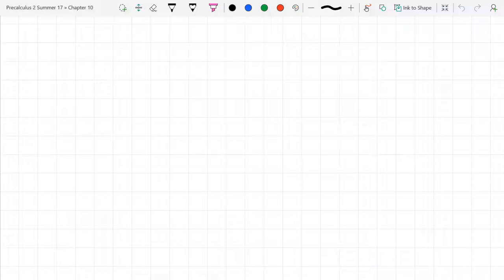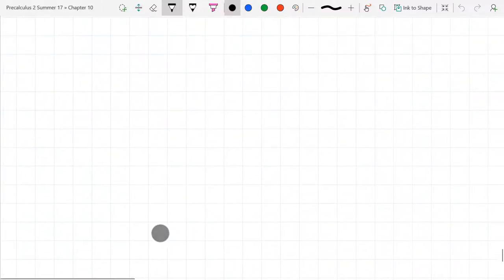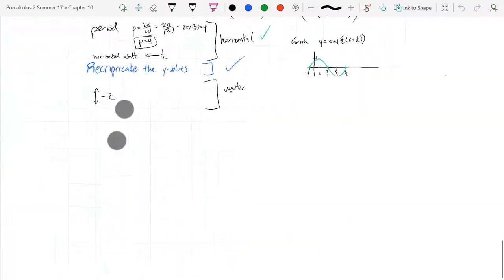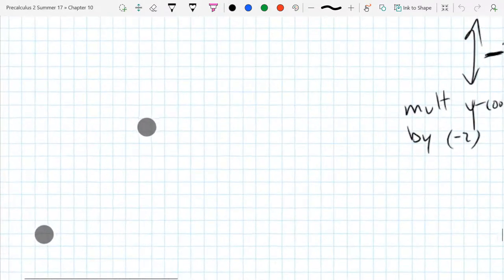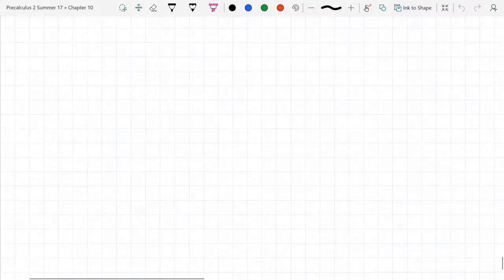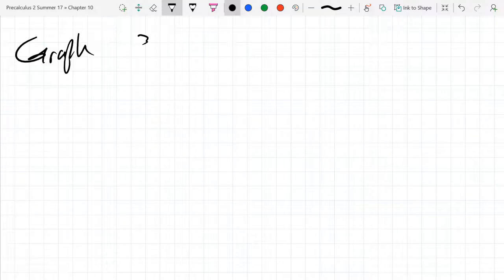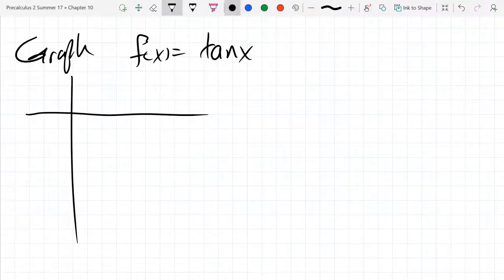So we're gonna do the clueless method, and then when we're done graphing tangent, we're going to just graph the reciprocal, which is cotangent. So again, clueless method is what you use when you don't know what's going on.